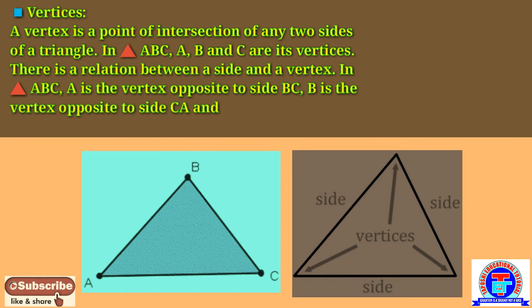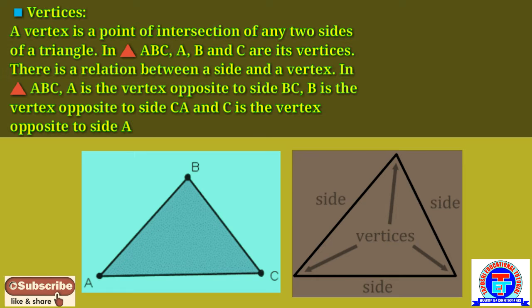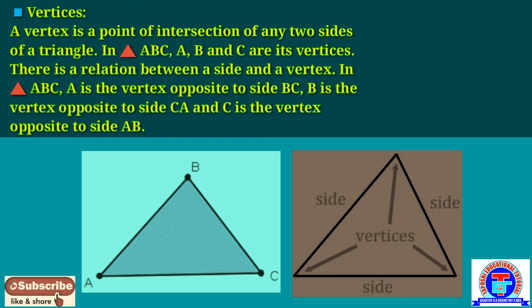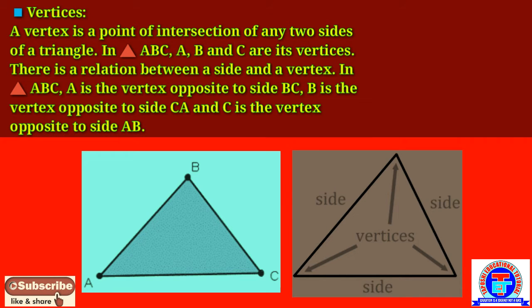There is a relation between the sides of a triangle and its vertices. In triangle ABC, A is the vertex opposite side BC, B is the vertex opposite side AC, and C is the vertex opposite side AB.